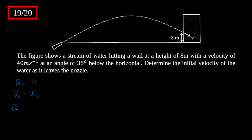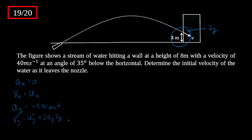We also have acceleration in the y direction equal to negative 9.81 meters per second squared — negative because gravity points downwards. We can relate final and initial velocities using the equation vy² = uy² + 2·ay·sy, since we're given sy, the height.